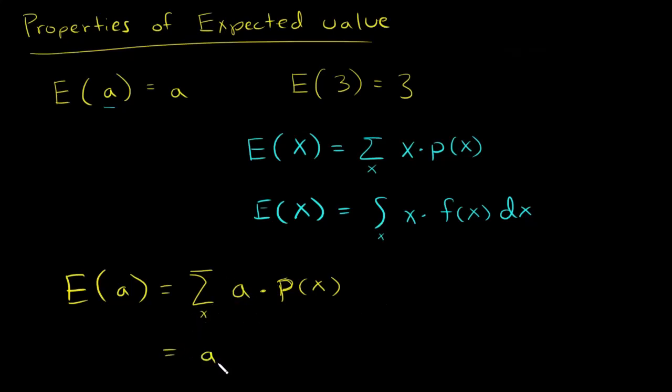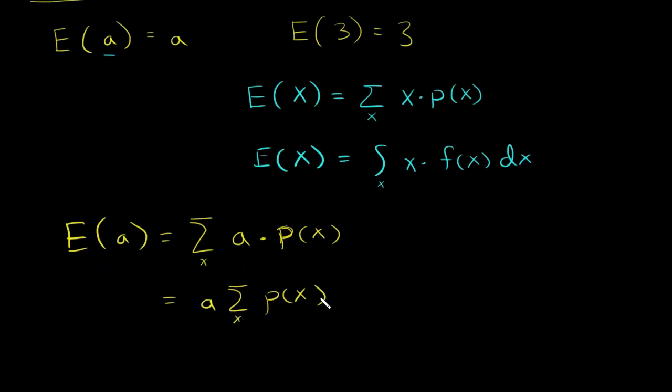And then since this constant doesn't depend on x, it can be basically pulled out of the sum. And by definition of a probability mass function, we know that if you sum the probability mass function over x, you should get one. That's by definition of probability mass functions.